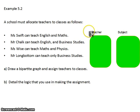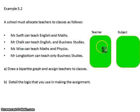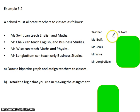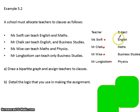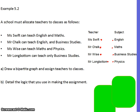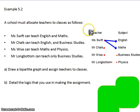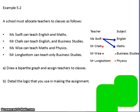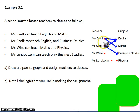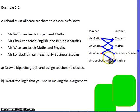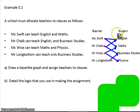A school must allocate teachers to classes. We're going to create the bipartite graph before solving the assignment problem. Ms. Swift can only teach Maths and English. Mr. Chalk can teach English and Business Studies. Mr. Wise can teach Maths and Physics. And Mr. Longbottom can only teach Business Studies. So we have a list of teachers as vertices and a list of subjects as vertices. We join up with arrows any that fit together, and we've got our bipartite graph linking everyone.